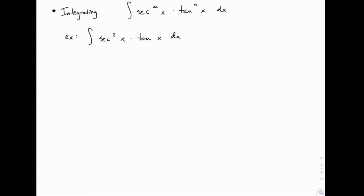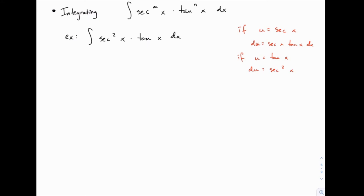We're going to approach this much the same as we did with the powers of sine and cosine, but we'll have to think carefully about our u-substitution. With sine and cosine, if u was one of the functions, du was simply the other with a positive or negative sign. But here, if u equals secant of x, then du equals secant times tangent. If u equals tangent of x, then du equals secant squared of x. That's why we reviewed those derivatives at the beginning of this section.